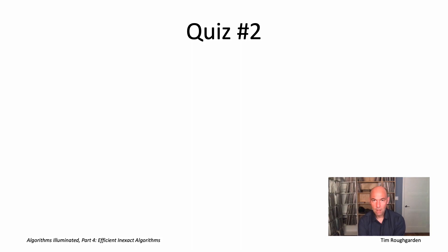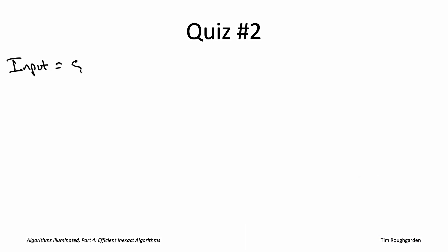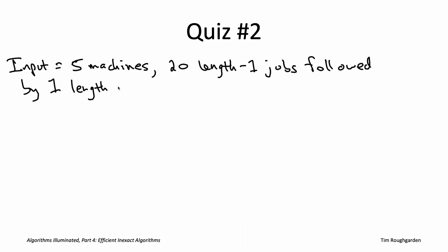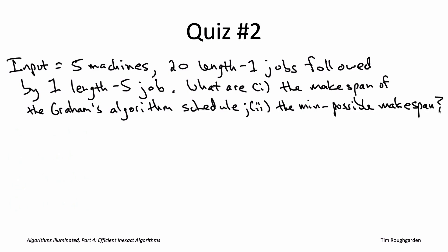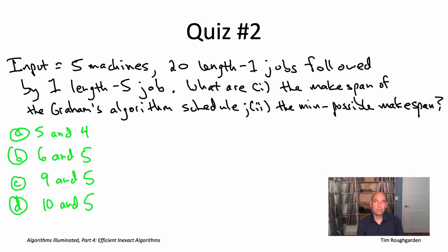Let's turn to the trickier issue: the quality of the schedule returned by Graham's algorithm. Let's get an initial feel for this in the following quiz. Suppose there are five machines and 21 jobs: the first 20 jobs all have length one, and the 21st job has length five. Figure out the schedule computed by Graham's algorithm and its makespan, and also figure out how small the makespan could possibly be in a perfect world.